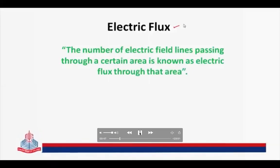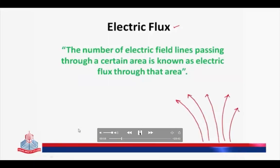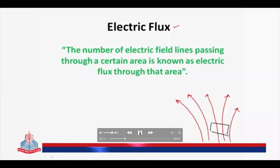We define electric flux as: the number of electric field lines passing through a certain area is known as electric flux through that area. We draw the electric field produced by a body, place a certain area element in this field, and the number of lines passing through that area gives the electric flux. If the area is placed close to the body, more lines pass through it — for example flux = 2 — and if placed farther away, fewer lines pass — flux = 1.